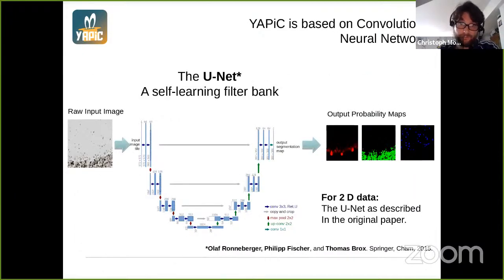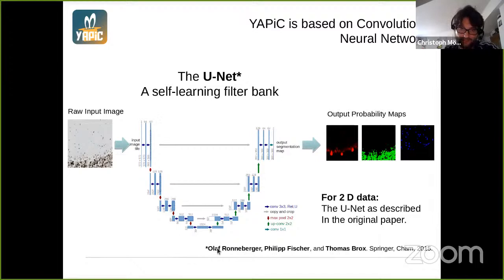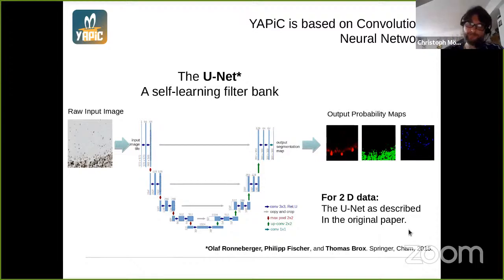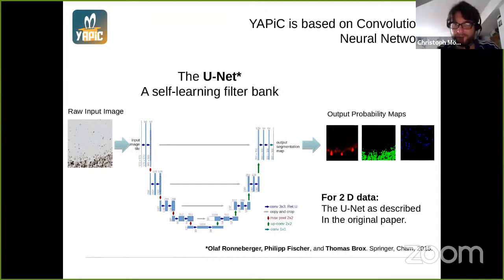We use a so-called UNET, which is a convolutional neural network. This UNET was first described by Olaf Ronneberger et al. in 2015, and we started immediately in 2015 to develop this YAPIC tool, because we saw it was a great way to deal with these very important tasks that we had in our image analysis group.